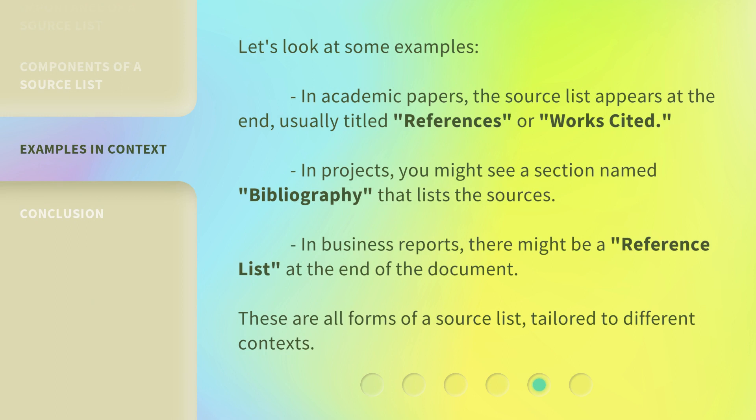Let's look at some examples. In academic papers, the Source List appears at the end, usually titled 'References' or 'Works Cited.' In projects, you might see a section named 'Bibliography' that lists the sources. In business reports, there might be a 'Reference List' at the end of the document. These are all forms of a Source List, tailored to different contexts.